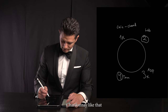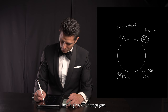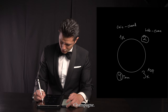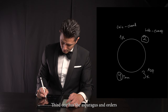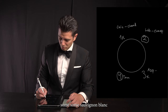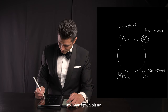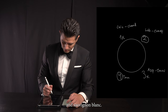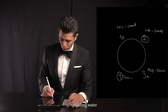The man on the first seat orders the chicken and a glass of chardonnay — I'll write 'chardonnay' like that. For the second person, they order the lobster and a glass of champagne — 'champ' short for champagne. The third person has the asparagus and orders a sauvignon blanc. The fourth person just has sparkling water — 'spark water'.